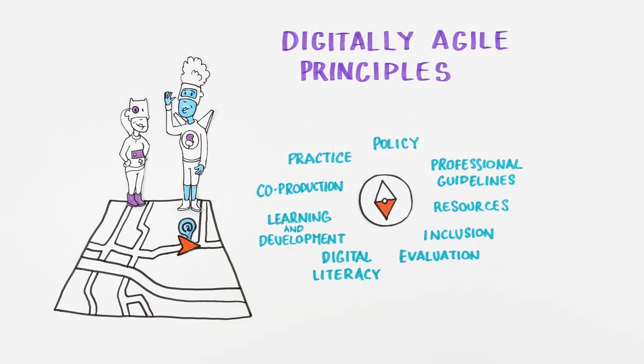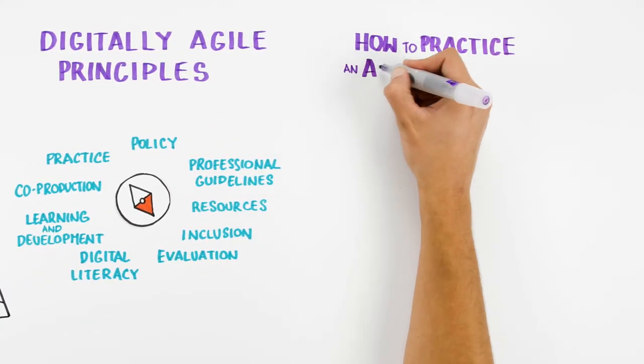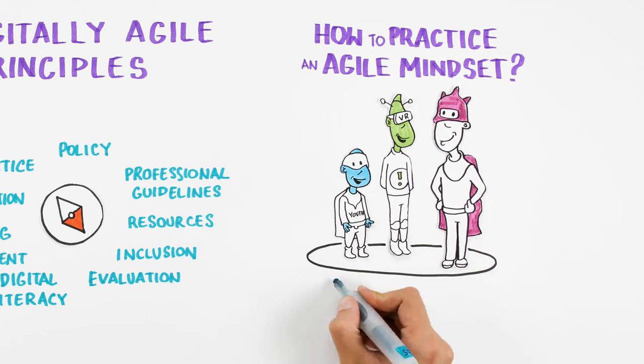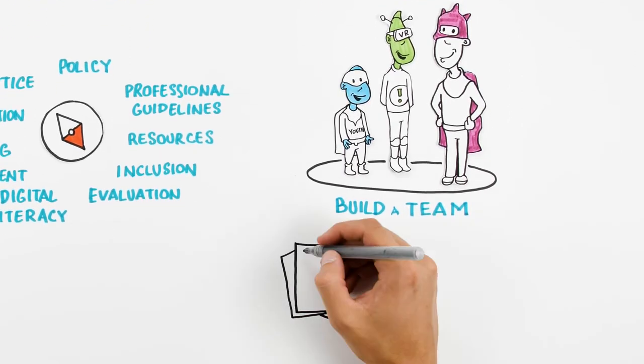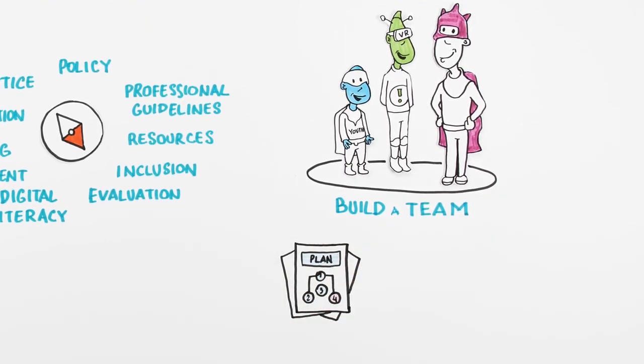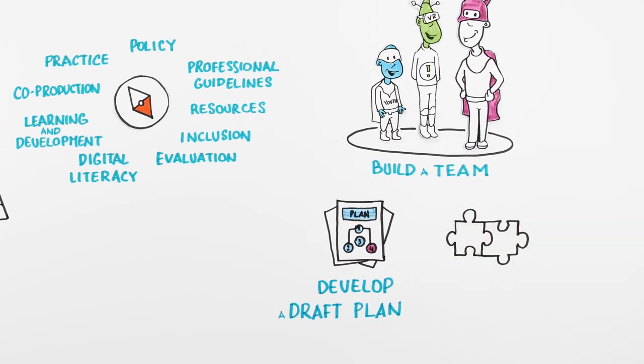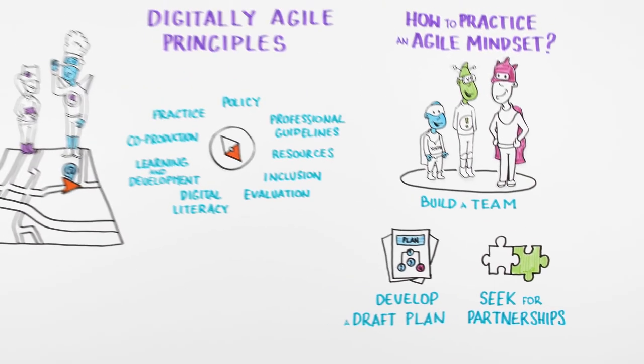So, how can you practice an agile mindset to develop digital youth work? Build a team of individuals curious about new technologies and eager to collaborate on developing digital youth work. Develop a draft plan to begin with first activities and learn from this experience. Seek partnerships outside your organisation to develop new initiatives.